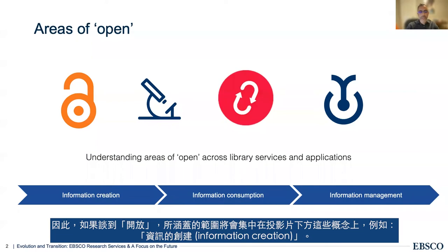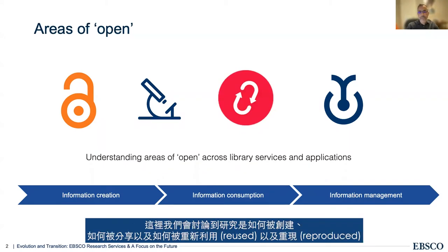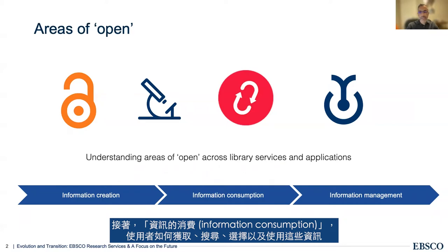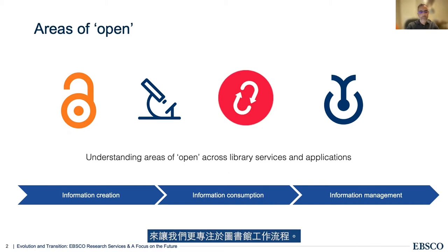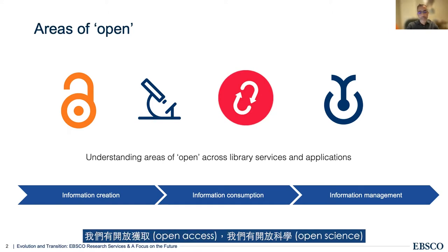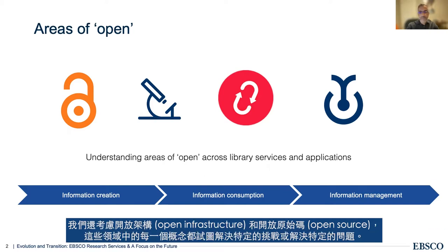If you think about open, these areas really center on information creation — how research is created, how it's shared, how it's reused and reproduced — to information consumption, how users access, search, choose and use information, as well as information management, where we think about library workflows and how we develop and manage our collections. Across these areas, we have open access, open science, open infrastructure, and open source, and each seeks to address a specific challenge.